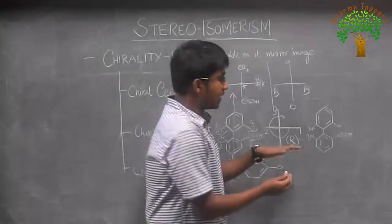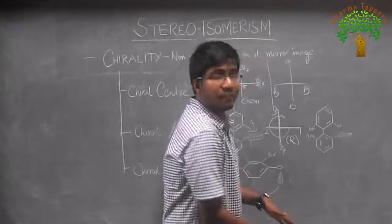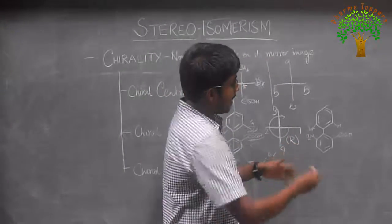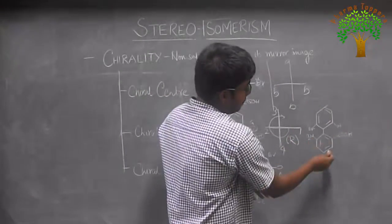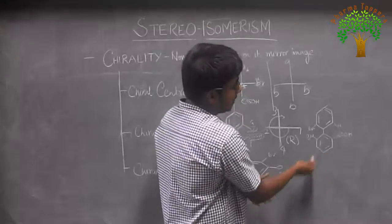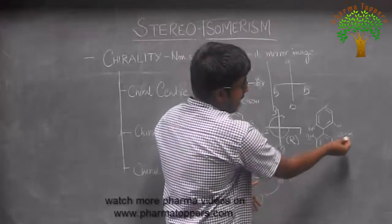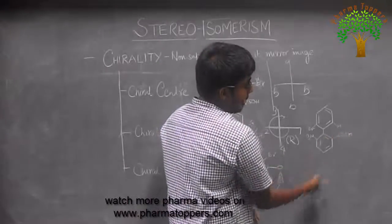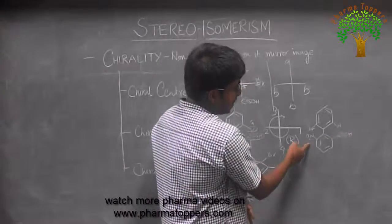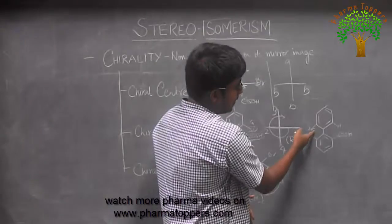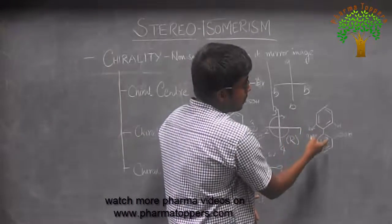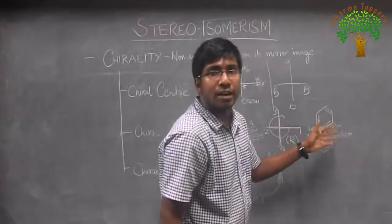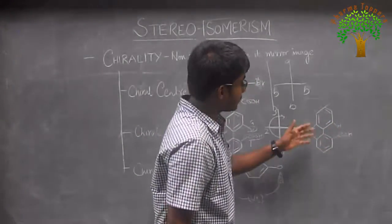We have a homework problem: a similar biphenyl compound with different groups — a carboxylic acid group, a nitro group, a bromine group, and a hydrogen group. Try this example out and post your answer in the comment box.